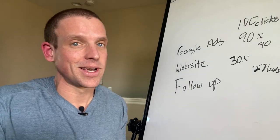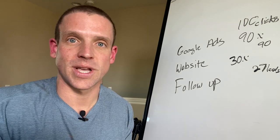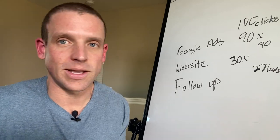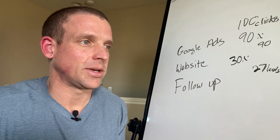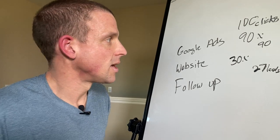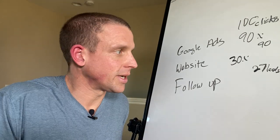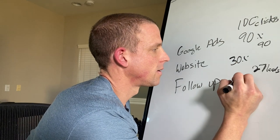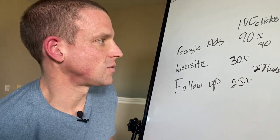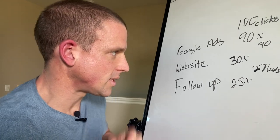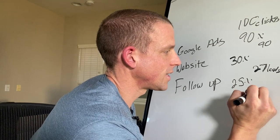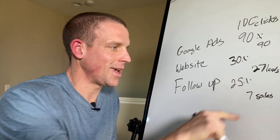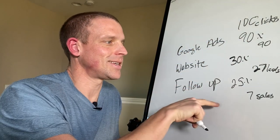After you give the price, you've got an automated system that follows up several times until they book or tell you to stop. Price is important, but it's not the most important thing and it shouldn't be the lowest price. Because you have all of this in place, you're closing at anywhere from 20 to 35% — let's call it 25%. So 25% of 27 leads gives you about 6.75, which we'll call seven bookings.